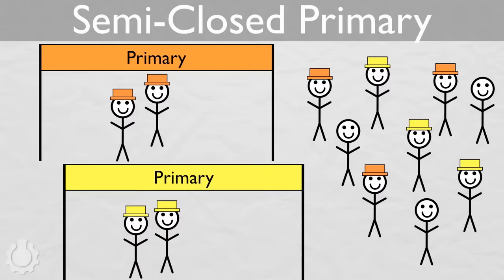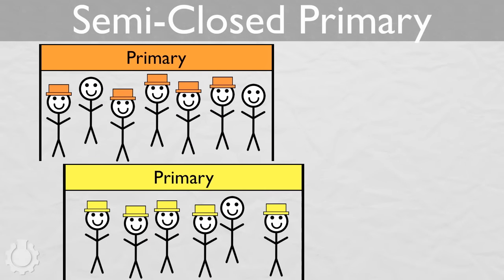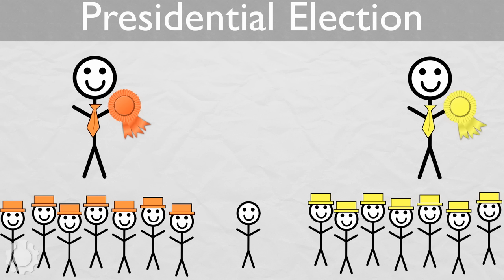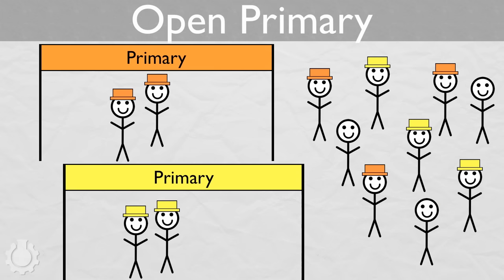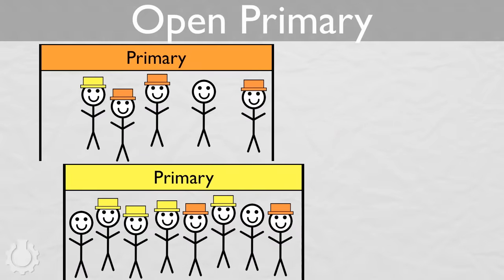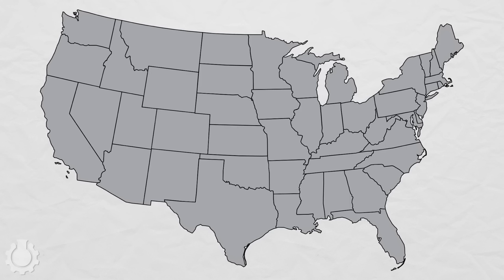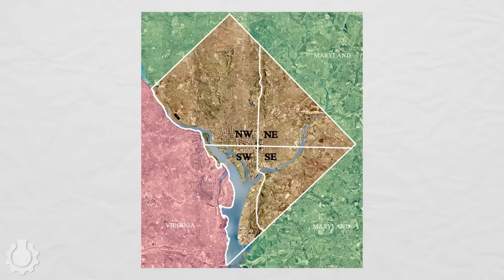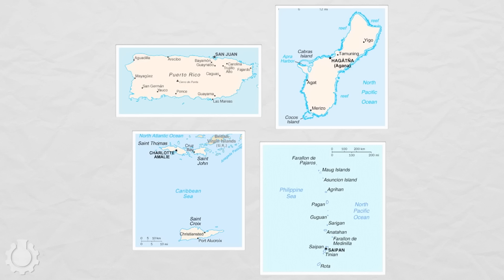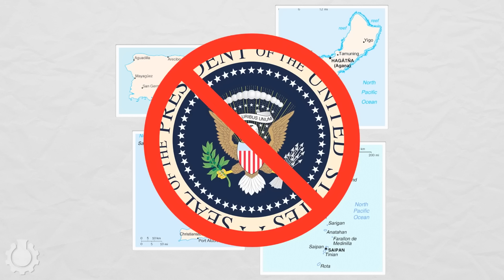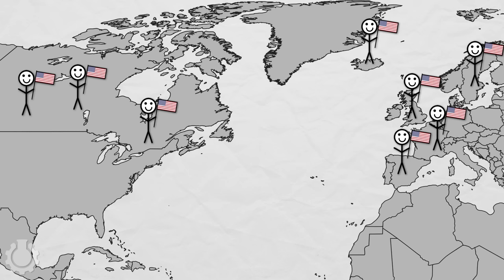Some states have semi-closed primaries, where independents can pick one and only one primary to vote in. Parties allow this because the presidential election is often determined by independents, so knowing which candidates they like is useful. A few states and parties have open primaries, where any citizen, no matter which party they're registered with, can pick a primary to vote in. Primaries are also held in the District of Columbia and the oft-forgotten territories — though territorial residents can't vote in the actual presidential election. There are also Americans living abroad who, depending on the party, vote in a block as though they all live together in one big extra state.